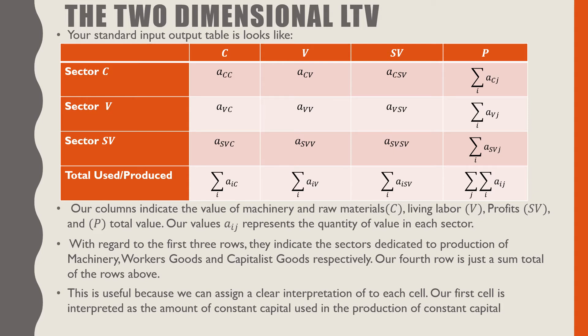Our columns indicate the value of machinery, raw materials, and living labor, profits, and total value. Our values A_ij represent the quantity of value used in each sector.